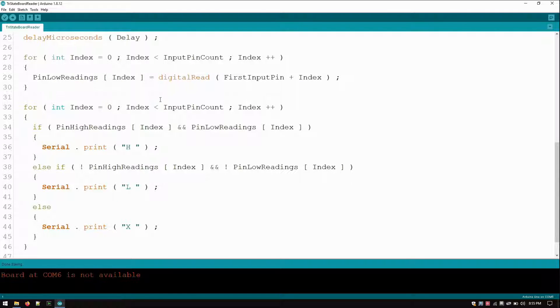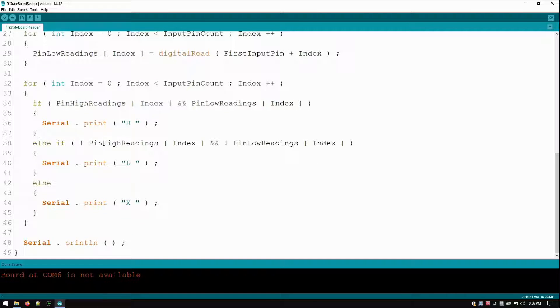Then I simply compare them. If both of a pin's readings were high, then the signal is high. If both of the pins readings were low, the signal is low. Otherwise, the signal is floating.